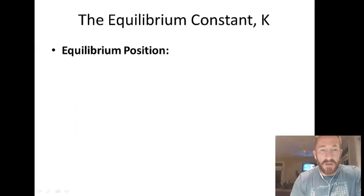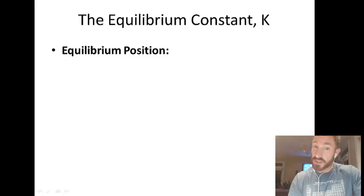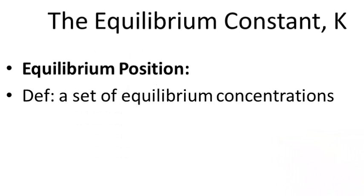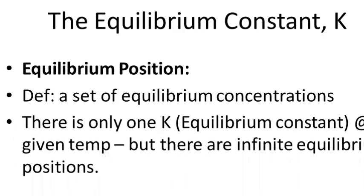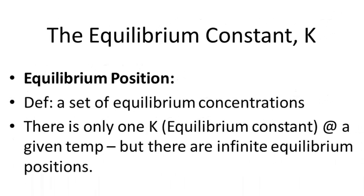A couple of things about K. First, we want to make a distinction between an equilibrium position and the equilibrium constant. An equilibrium position just means there's a set of equilibrium concentrations. So what's the difference? There's only one equilibrium constant at a specific temperature, but there's an infinite number of equilibrium positions.